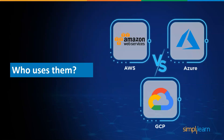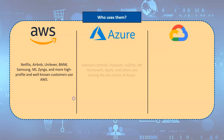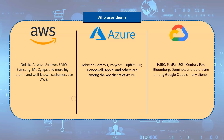Because AWS is the oldest player in the cloud business, it has the largest user base and community support. AWS has the largest number of high-profile clients including Netflix, Airbnb, Unilever, BMW, Samsung, and others. Azure is gaining high-profile customers and currently boasts around 80% of Fortune 500 firms, with clients like Johnson Controls, Polycom, Fujifilm, HP, Honeywell, and Apple. Google Cloud uses the same infrastructure as Google Search and YouTube, and many high-end enterprises trust it, including HSBC, 20th Century Fox, Bloomberg, and Domino's.